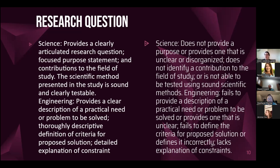At a one in the science category for the research question, it does not provide a purpose, or provides one that is unclear or disorganized, does not identify a contribution to the field, or cannot be tested using sound scientific method. For engineering at a one, it fails to describe a practical need or problem, fails to define criteria for a proposed solution or defines it incorrectly, and lacks explanation of constraints. Because there is so much text in all criteria, I'm only going to read the five scores from here on — the rubric and slides will be provided to you all.